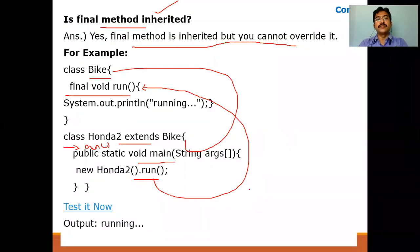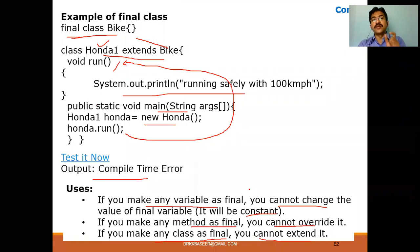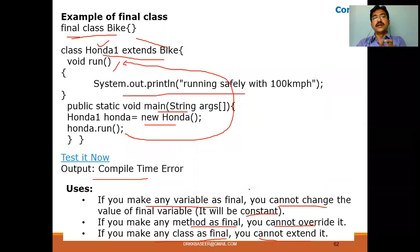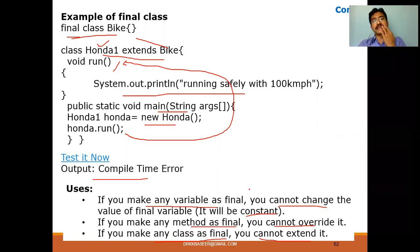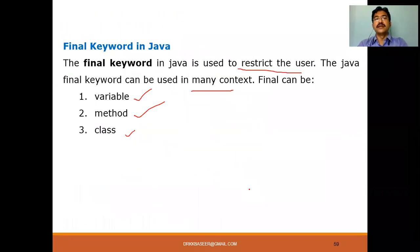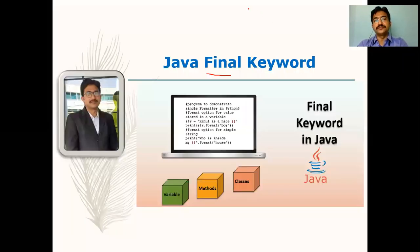To summarize: when a variable is declared as final, it is called a constant. When a method is declared as final, we can prevent method overriding. When a class is declared as final, we can prevent inheritance. A final method can be inherited by a child class, but a final class cannot be inherited. That's the complete concept of the final keyword in Java.